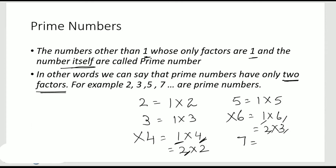For 7, we can write it as 1 times 7. So you see in all these examples the factors are 1 and the number itself.